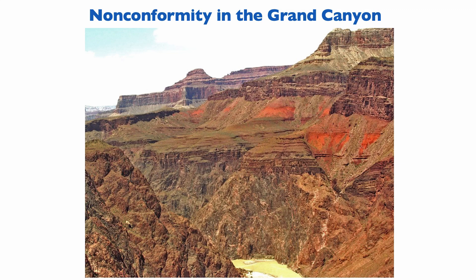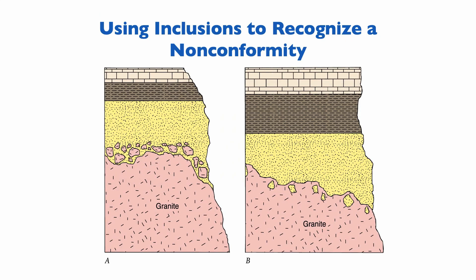In the Grand Canyon, we can see a nonconformity between the Vishnu Schist at the bottom and the Precambrian sedimentary succession above. The Vishnu Schist is a metamorphic rock and the sediments above are sediments, so we have a nonconformity. We can recognize a nonconformity thanks to the principle of inclusion. On the left, granite is present as inclusions into the sediments, implying the granite is older than the sediments.